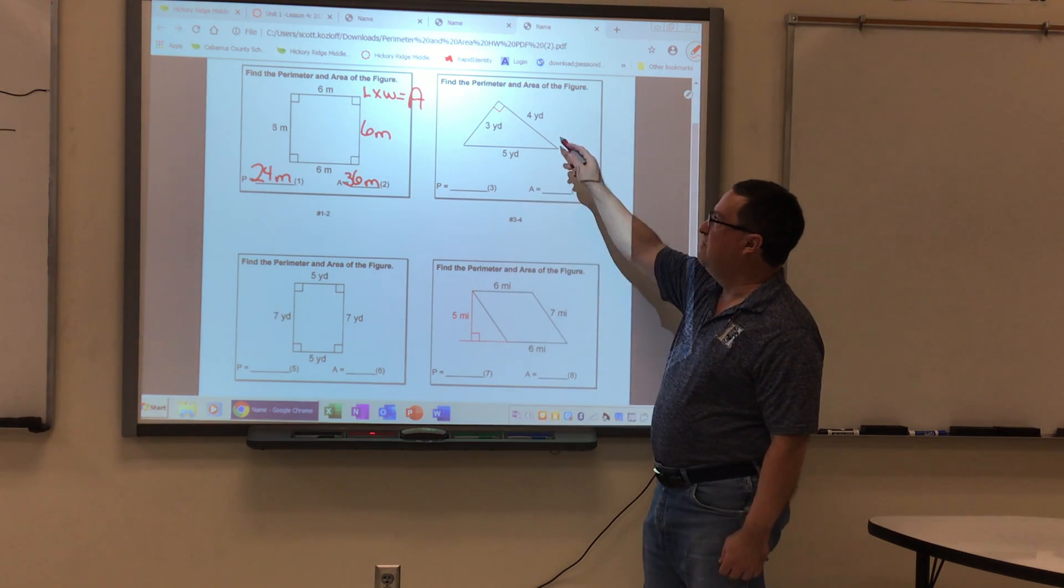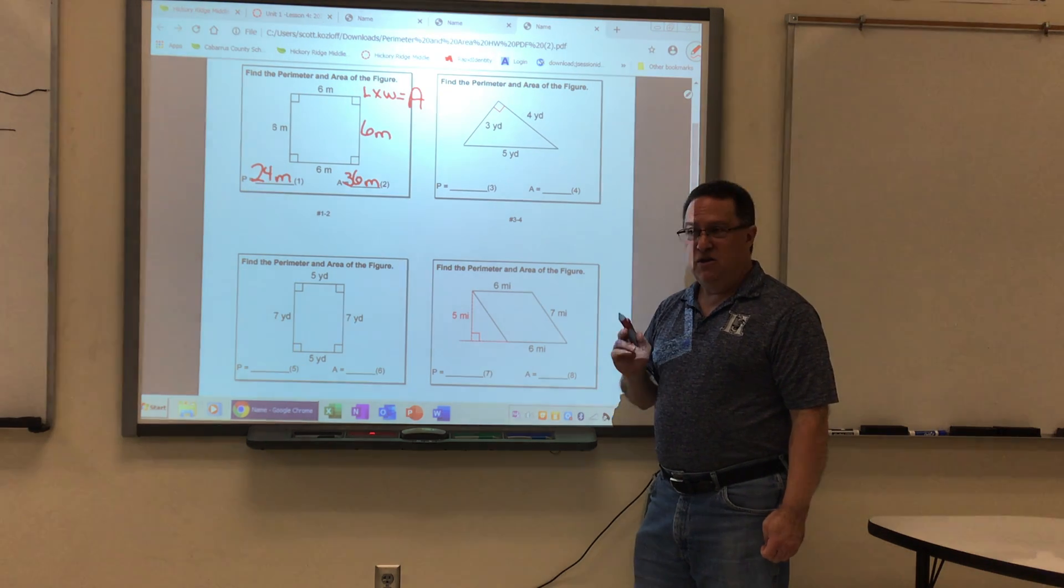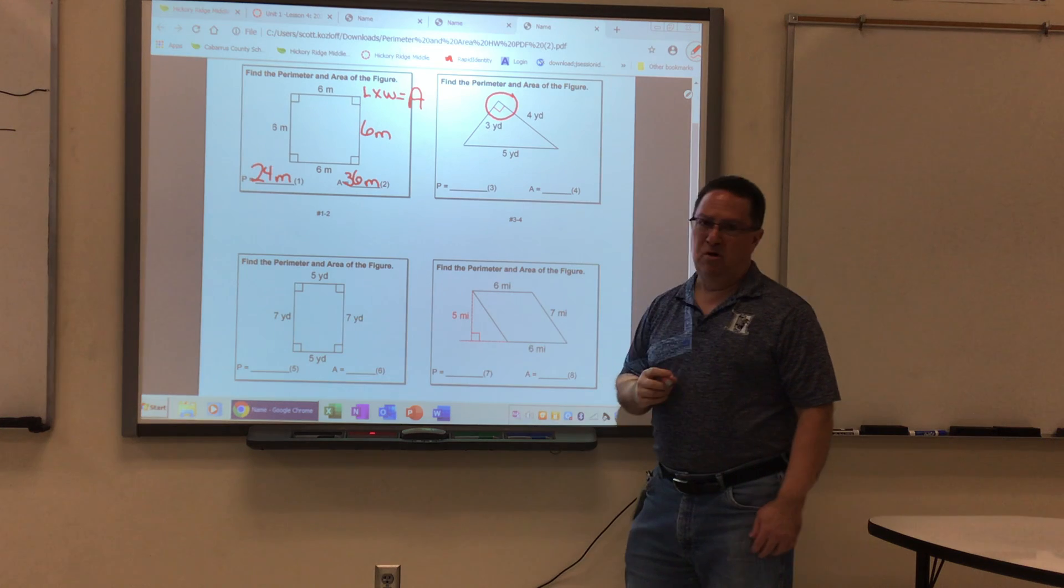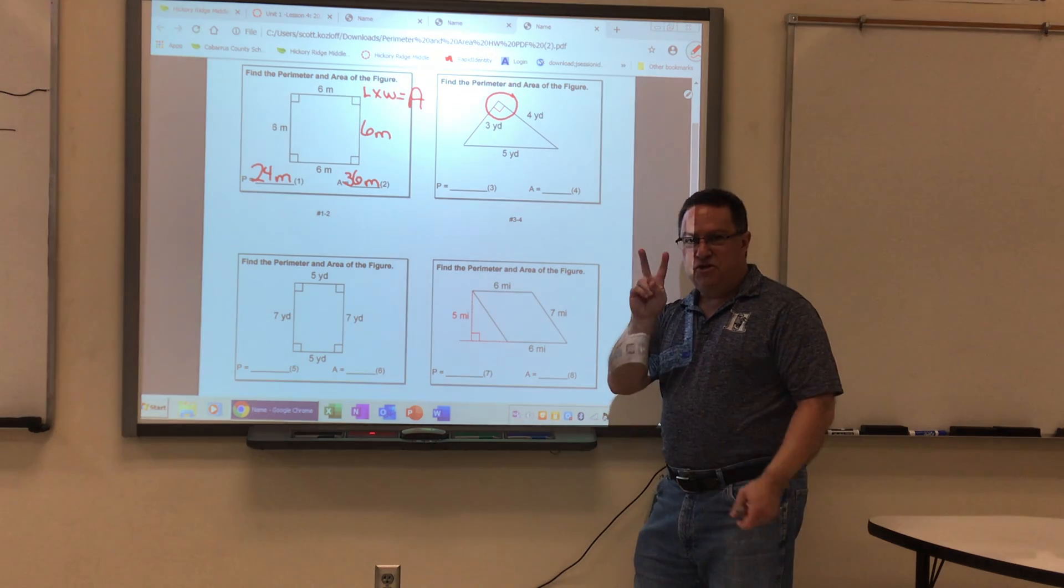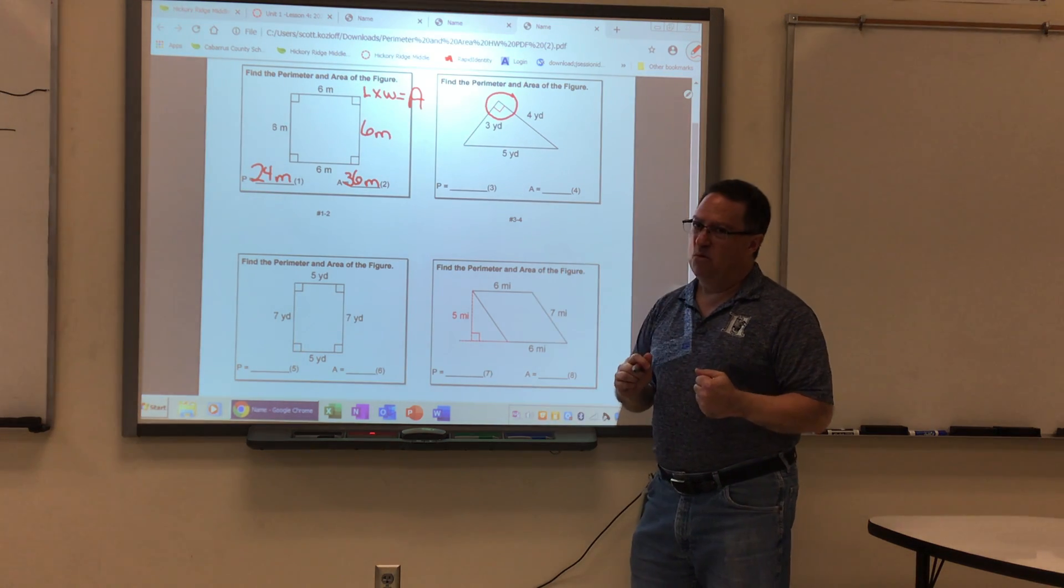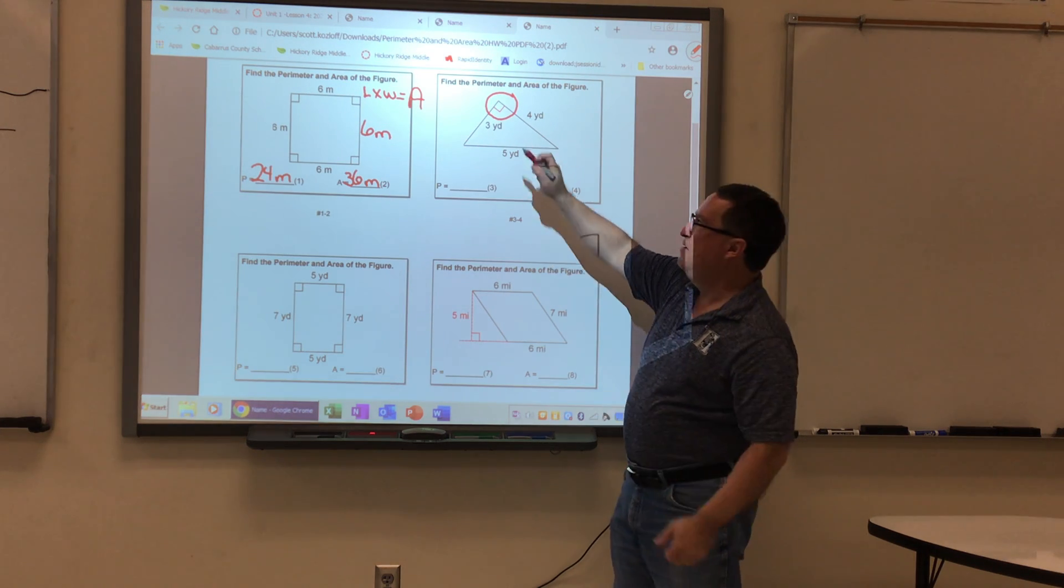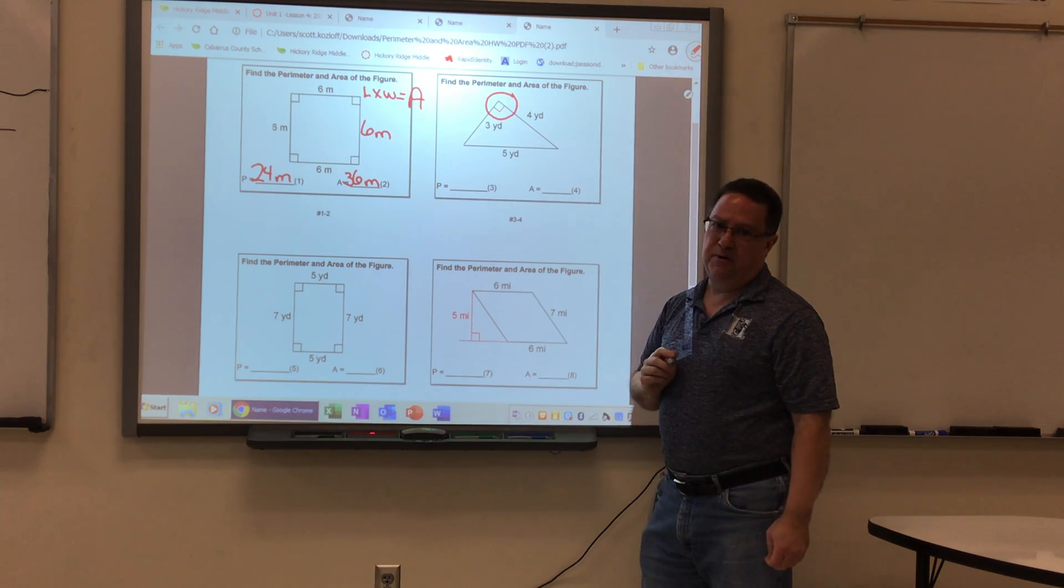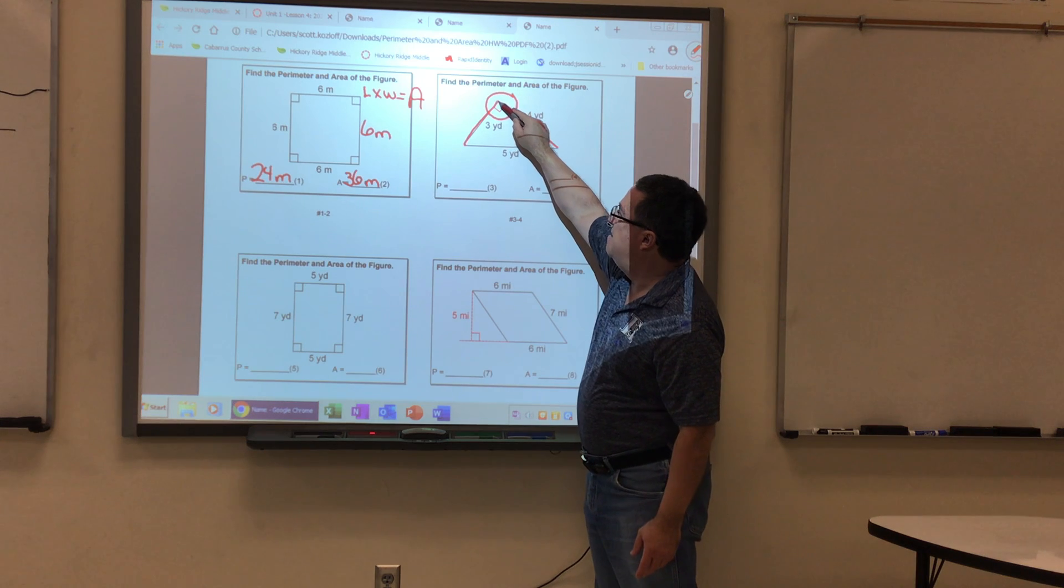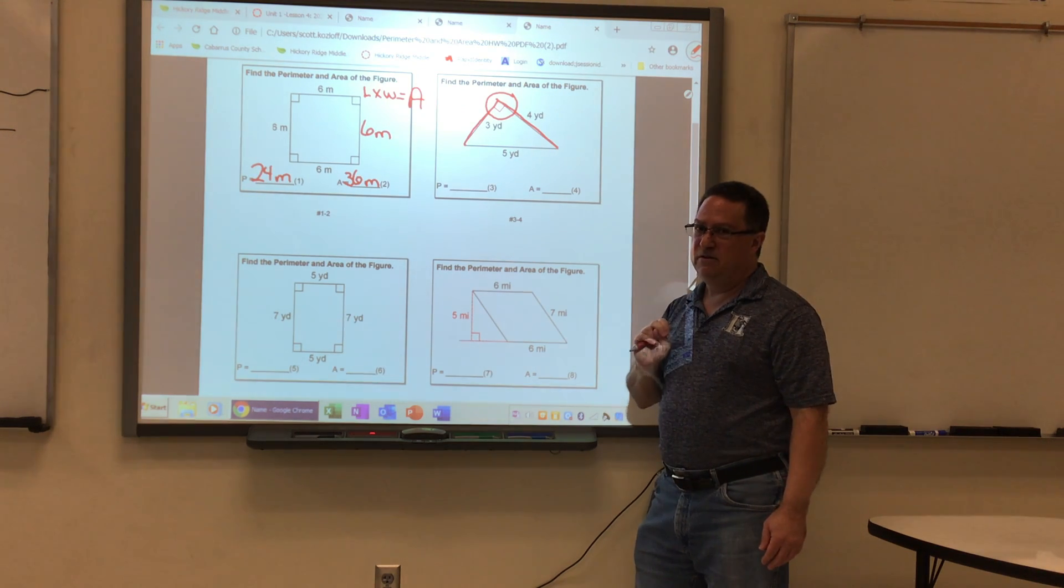For number three and four, for a triangle. This has confused some people and I want to make sure that any time you look at a triangle and you're trying to find the area, then you need to look for the right angle symbol. That right angle symbol tells you which two sides of the triangle to use as a base and a height. Now I can't do this on my smart board, but if you have your paper in front of you, if you printed it, if you turn that paper upside down, you'll be able to see that right angle a little better.